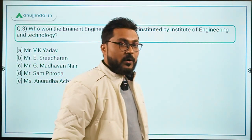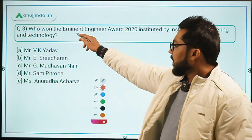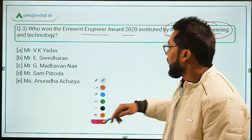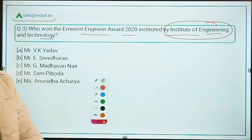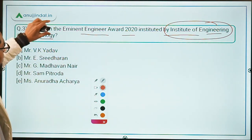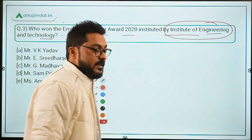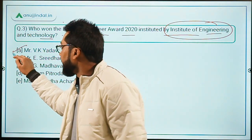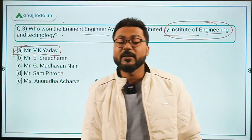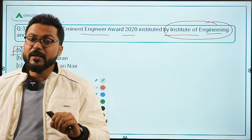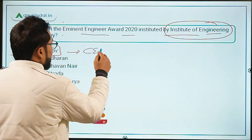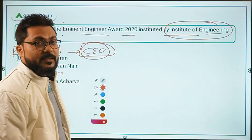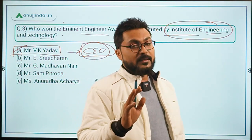Question 3 is about the Eminent Engineer Award 2020, instituted by the Institute of Engineering and Technology. This award was given to Mr. V.K. Yadav. He is the Chairman of the Railway Board and also the very first CEO of the Railway Board, as the position of CEO was not previously present in the Railway Board.